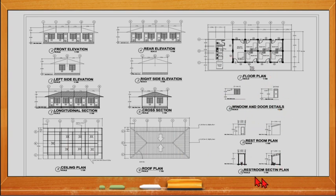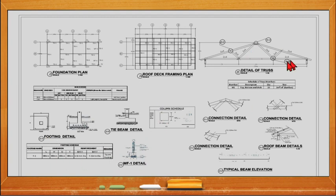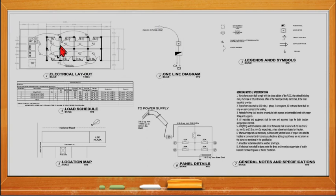Next we have the structural plan. It contains the foundation plan, the roof deck framing plan, the beam schedule, the footing and tie beam data, the column schedule, the footing schedule, the details of the truss and the truss schedule of members, and the connection details for the trusses and the roof beam details.